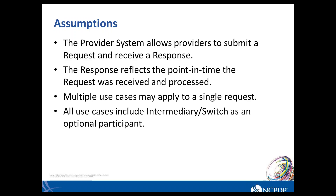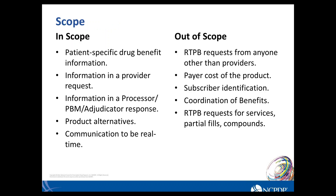In terms of what's in scope and out of scope: in scope are patient-specific drug benefit information, the information in the request and response, product alternatives, and real-time communication. What's out of scope for this initial standard includes requests from anyone other than providers, the payer cost of the product, subscriber identification, coordination of benefits, and requests for services, partial fills, or compounds.